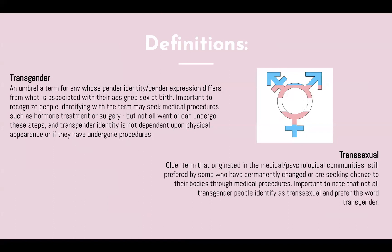To start, we'll be setting some baseline definitions for the rest of this presentation. Transgender is an umbrella term for anyone whose gender identity and gender expression differs from what is associated with their assigned sex at birth. It's important to recognize that people identifying with this term may seek medical procedures such as hormone treatment or surgery, but not all want or can undergo these steps, and transgender identity is not dependent upon physical appearance or any procedures undergone. The term transsexual is an older term that originated in medical and psychological communities, still preferred by some who permanently change or seek to change their bodies through medical procedures, but not all transgender people identify as transsexual.